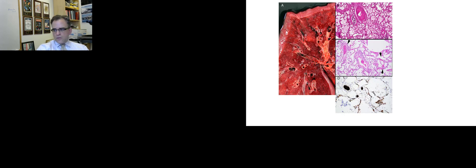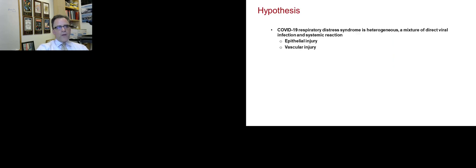In addition to those epithelial findings, we found thrombosis — large vessel thrombosis as well as small microthrombi. Immunohistochemistry for CD61 showed thrombosis in the capillary bed. What we found was that this respiratory distress syndrome is a heterogeneous disease. We saw cases in a large proportion, especially within the first four weeks, with a mixture of direct viral infection, and also the effect of some systemic reaction in the form of thrombosis. We were starting to divide this heterogeneity into both viral versus non-viral injuries in the epithelial compartment, as well as the effect of vascular injury in the vascular compartment.